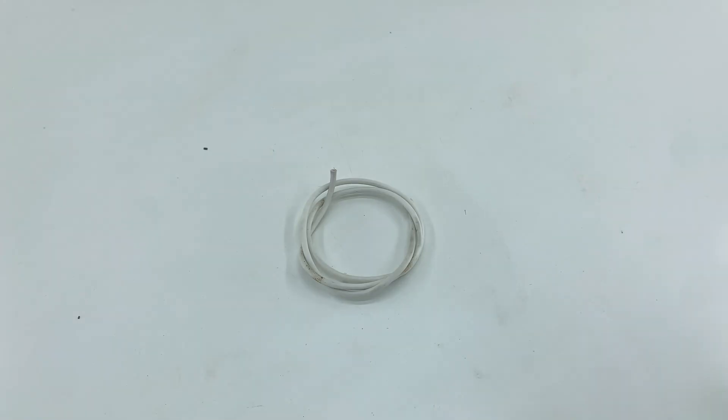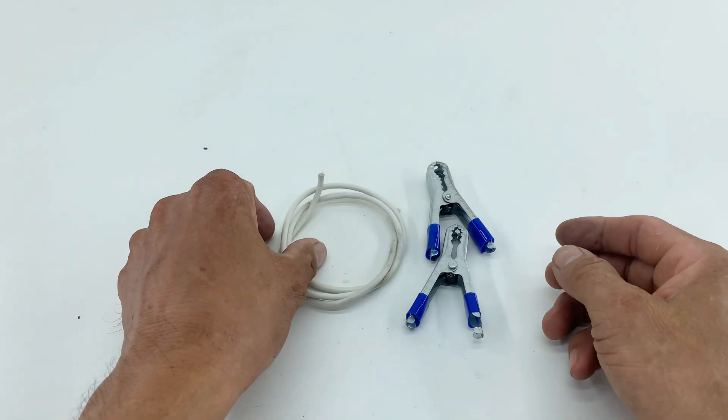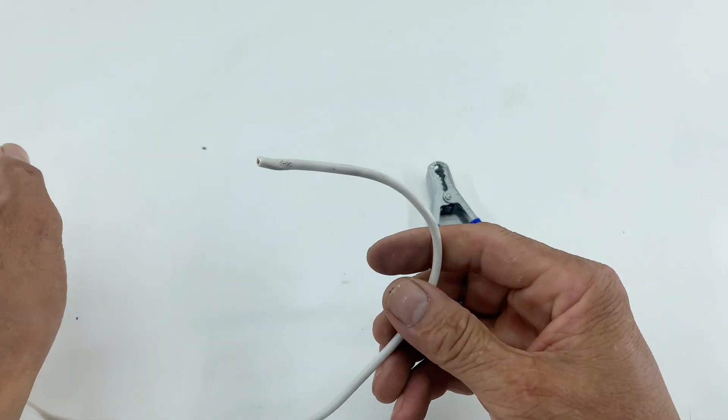For the other lead, I'm taking a white wire and stripping both ends. I'll twist the strands on each end and then attach two blue crocodile clips.